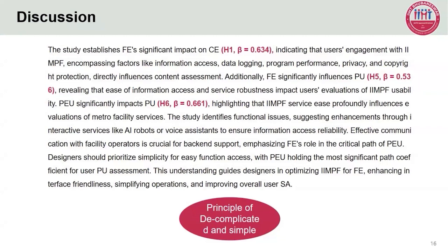FE significantly influences usability (H5, beta = 0.536), revealing that ease of information access and service robustness impacts users' evaluations of IIMPF. Usability significantly impacts satisfaction (H6, beta = 0.661), highlighting that IIMPF services profoundly influence evaluations of metro facility services. The study identifies functional issues, suggesting enhancements through interactive services like AI robots or voice assistants. Designers should prioritize simplicity for easy function access, enhancing interface friendliness, simplifying operations, and improving overall user satisfaction.